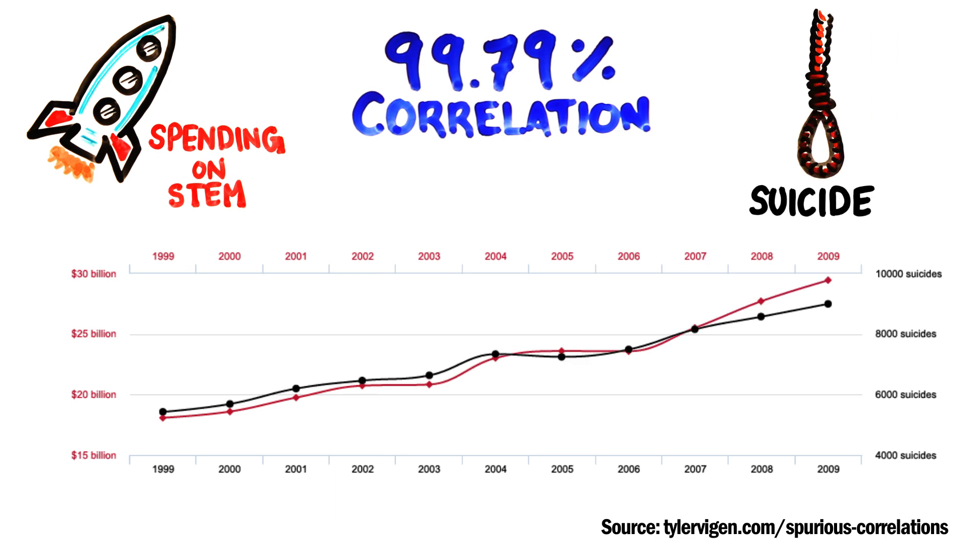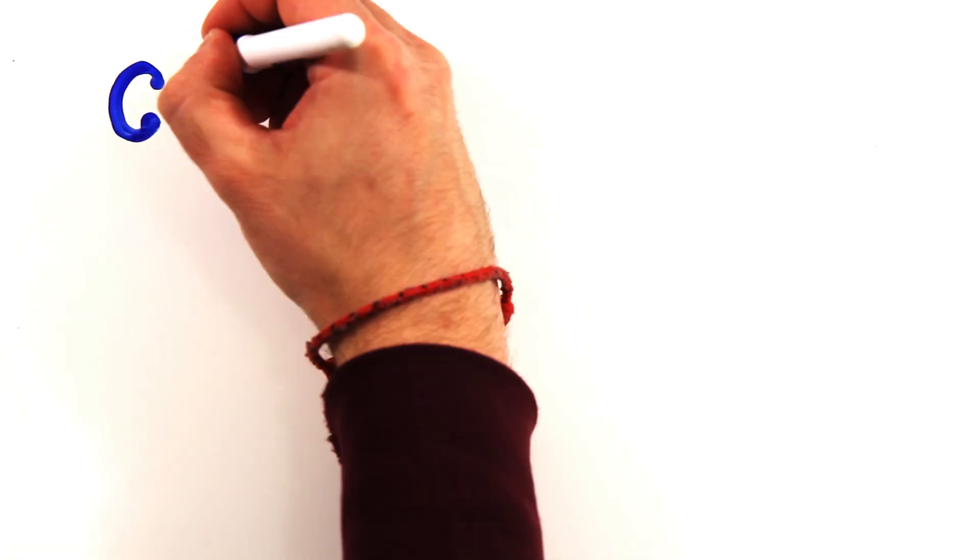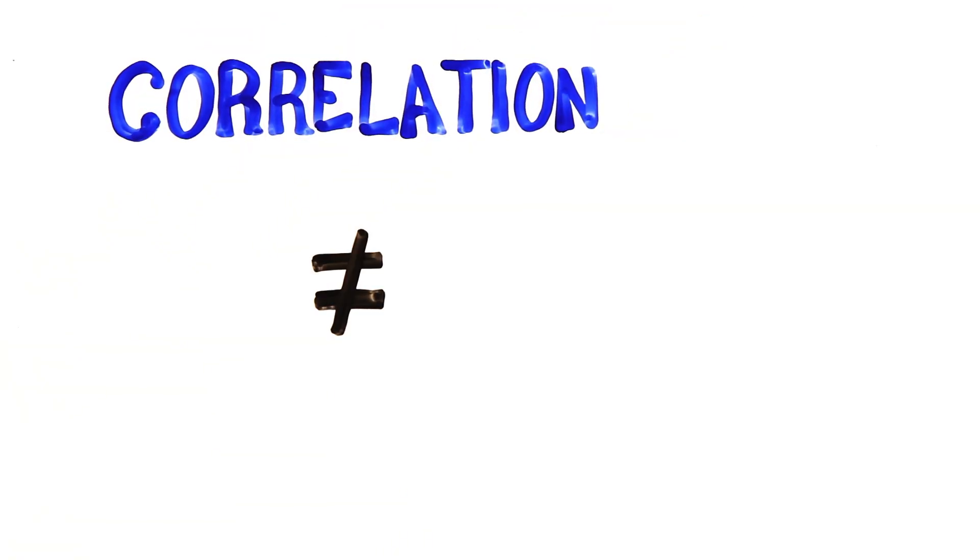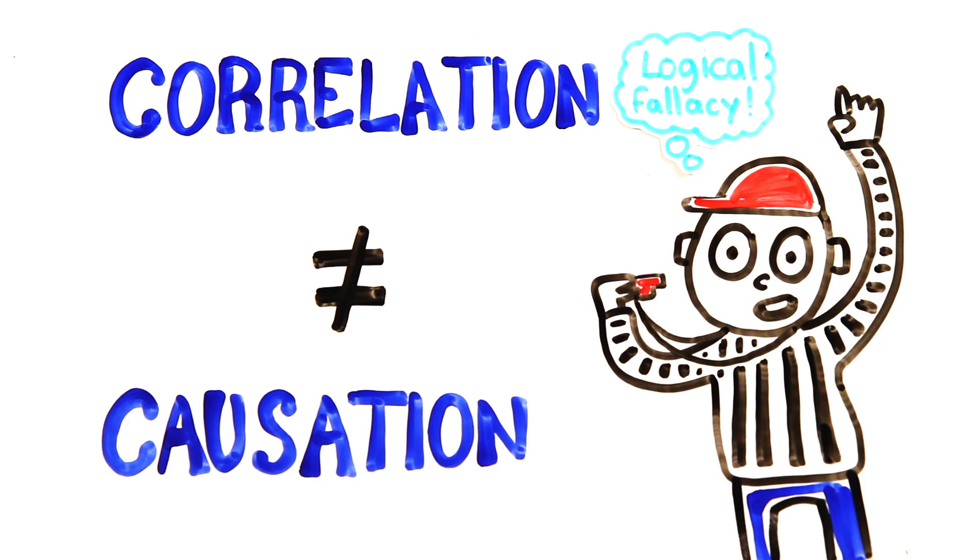Just because there is a correlation between two variables doesn't mean that one causes the other. This assumption is a logical fallacy.